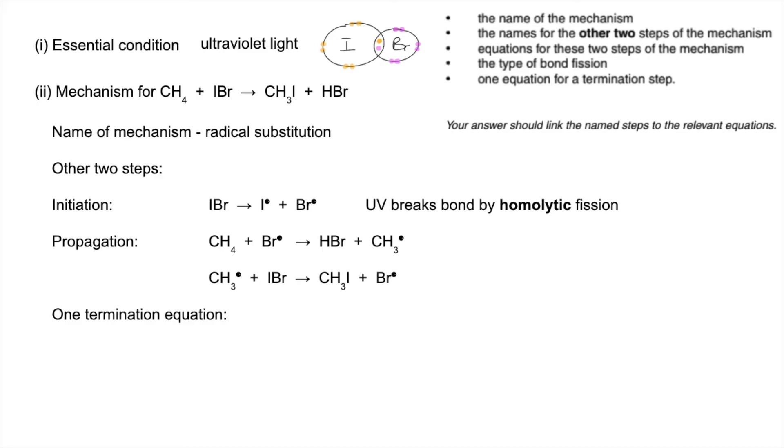So the final thing we've got to do is just come up with one termination equation. So I've put them all in, so one of these would be fine. So you could have two methyl radicals forming ethane, the two halogen radicals forming IBr, a methyl radical and an I radical to form CH3I, or a methyl radical and a Br radical forming CH3Br. And then the final two, two I radicals to form I2, two Br radicals to form Br2.